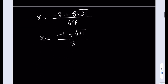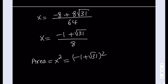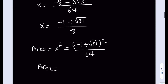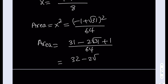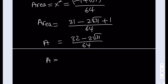But we need to find the area of the square, which is x squared. Squaring the expression (−1 + √31)/8 gives (31 minus 2√31 plus 1) over 64, which equals (32 minus 2√31) over 64. Dividing numerator and denominator by 2, the area equals (16 minus √31) divided by 32.